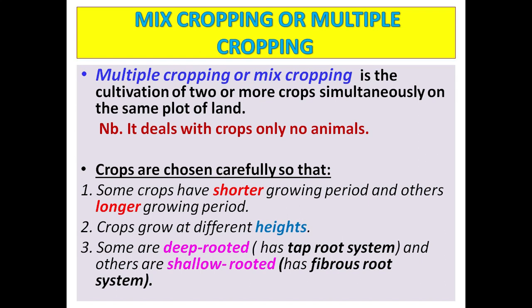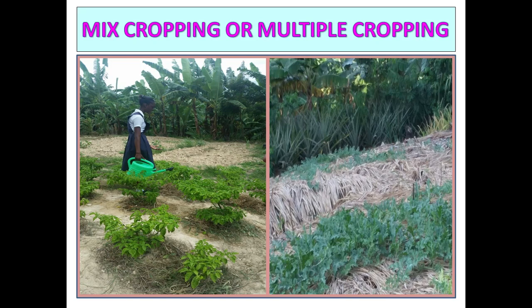Multiple cropping or mixed cropping is the cultivation of two or more crops simultaneously on the same plot of land. Note: it deals with crops only — no animals. Crops are chosen carefully so that: some have shorter growing periods and others longer; crops grow at different heights; and some are deep-rooted while others are shallow-rooted. There is a specific methodology to mixing crops to maintain soil fertility.